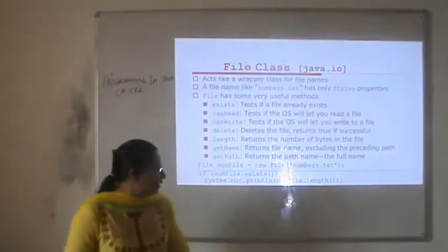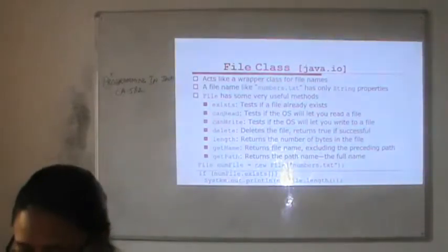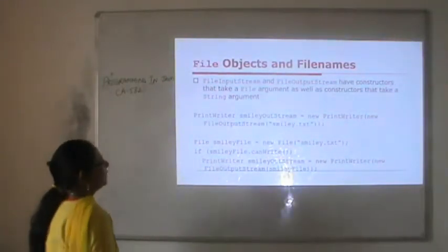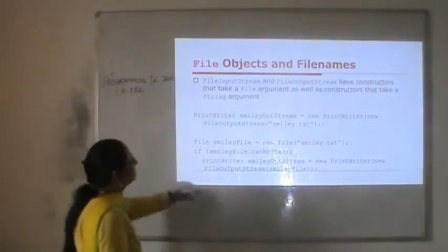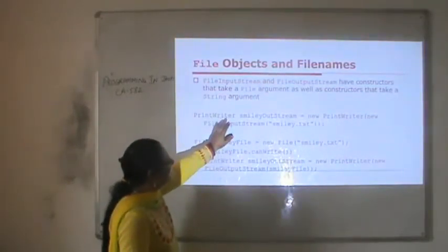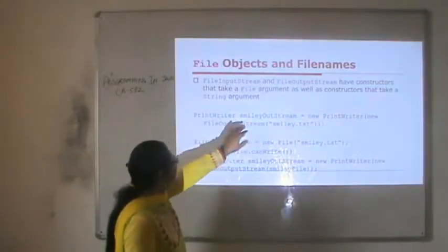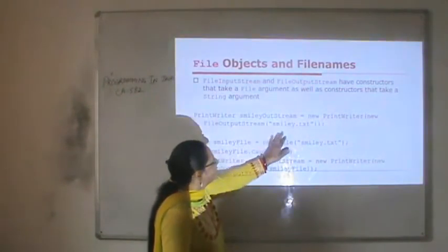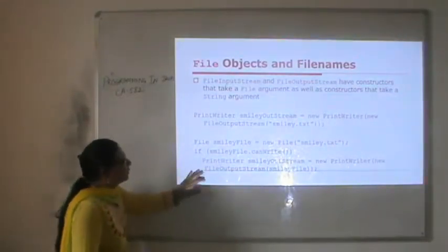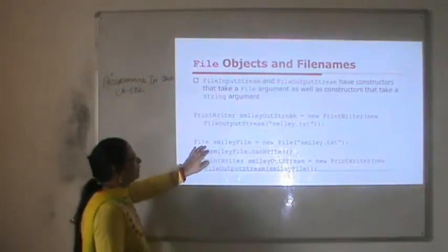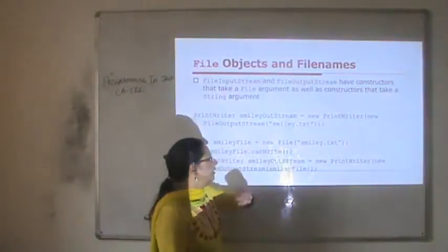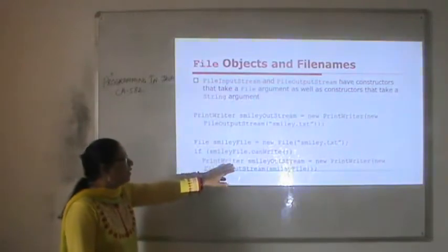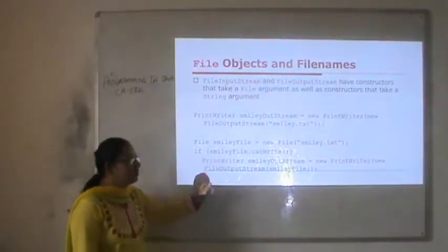This method displays the length — the number of bytes already written in that file. File objects and file names: FileInputStream and FileOutputStream have constructors that take a File object as well as a constructor that takes a String. We can create an instance of File class, pass the file name, check if we can write to the file, and then use the PrintWriter class for writing.